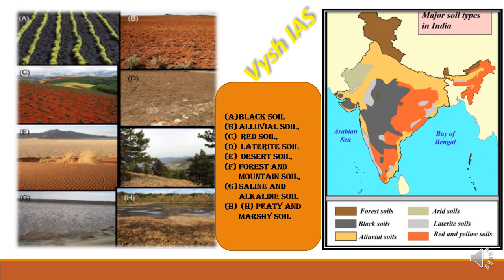As you can see on the screen, these are the different types of soils found in our country. We have black soil, alluvial soil, red soil, laterite soil, desert soil, forest and mountain soil, saline and alkaline soil, and peaty and marshy soil. These are the regions where they are found.